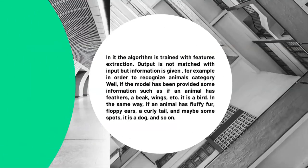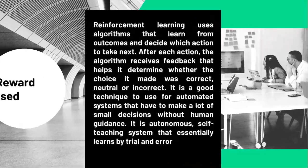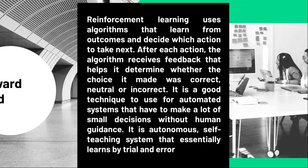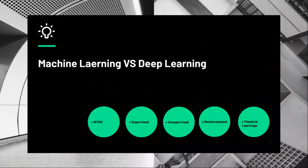Unsupervised learning is where the model is not trained with labeled data. Now let us move further to the next thing, which is very interesting — the reward-based system, that is reinforcement learning. It learns from outcomes and takes action based on what the output is. When it is correct, it is awarded; when there is a mistake, we improve the algorithm. It is an automated system which makes small decisions without human guidance, similar to a robot or a video game. This is a self-teaching system in reinforcement learning.